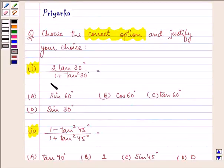Now here the first part which is given to us says that 2 tan 30 degree upon 1 plus tan square 30 degree should be equal to what? Should it be equal to sin 60 degree or cos 60 degree or tan 60 degree or sin 30 degrees.